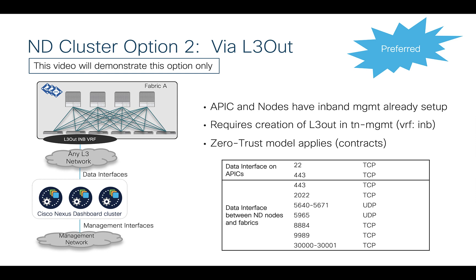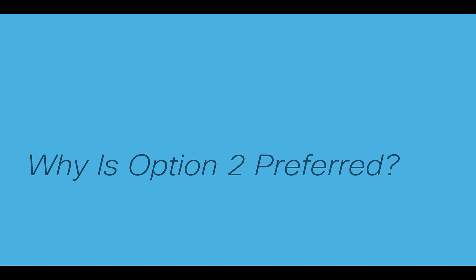Again, the zero-trust model applies because we're crossing EPG boundaries, and there's a list of all the ports you need to configure as filters and contracts. Alternatively, you could disable policy enforcement on the in-band VRF — less secure, but quick and dirty for a lab environment. Otherwise, do filters and contracts.